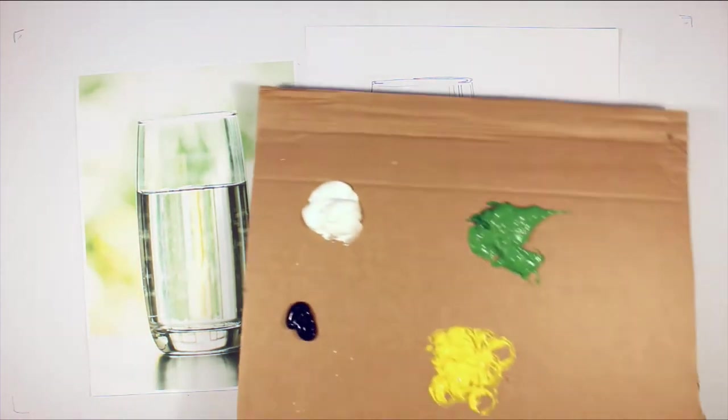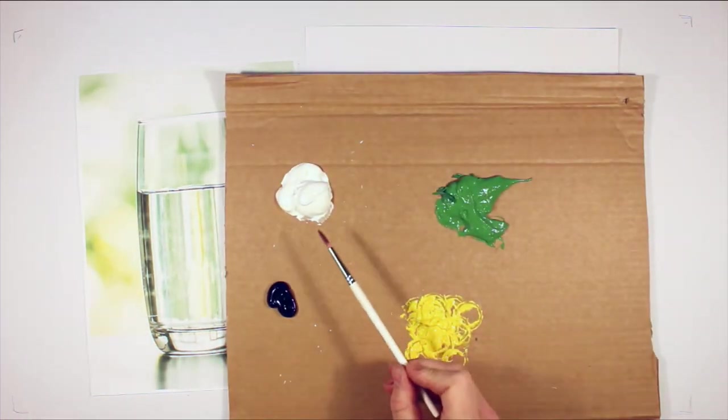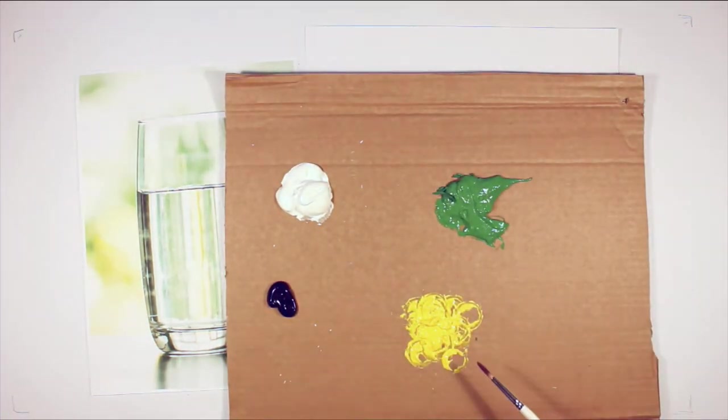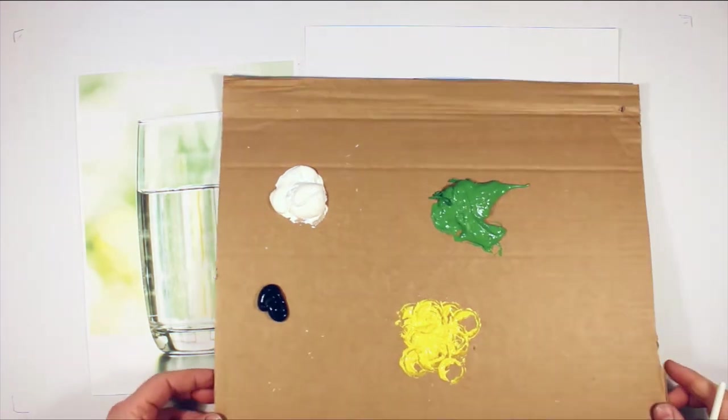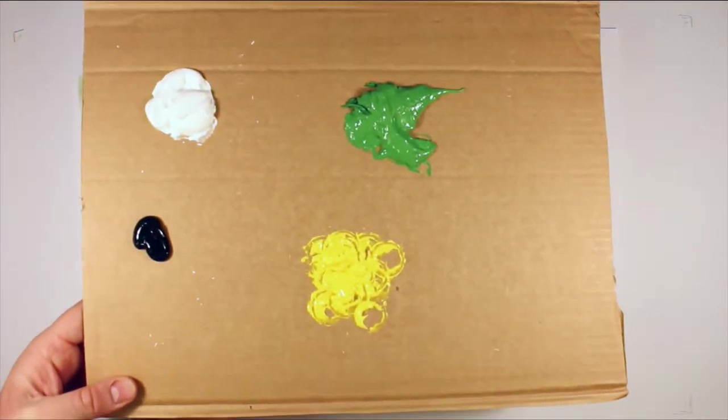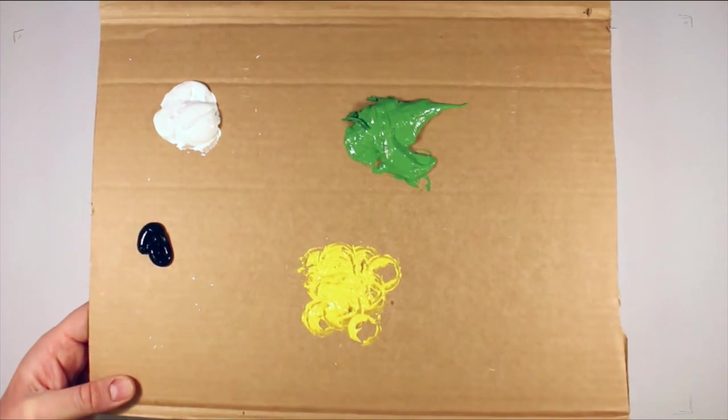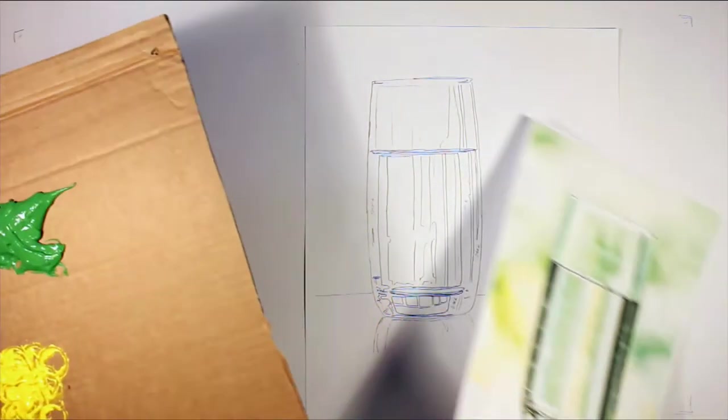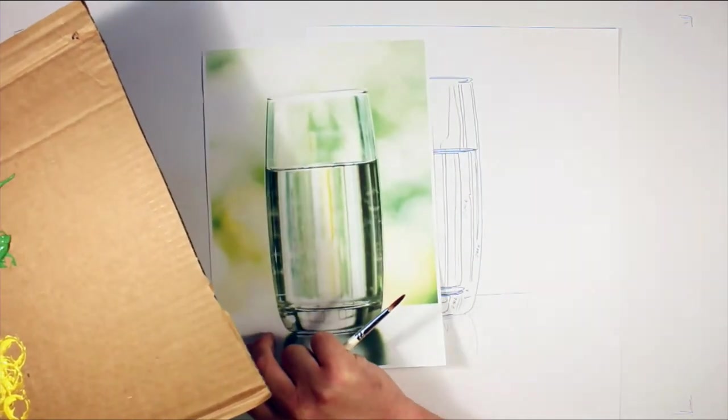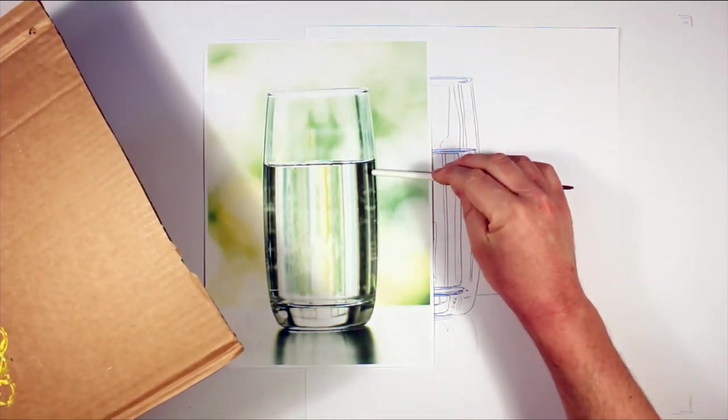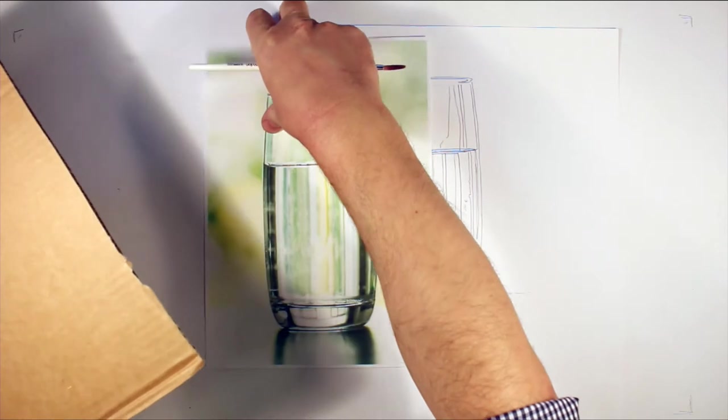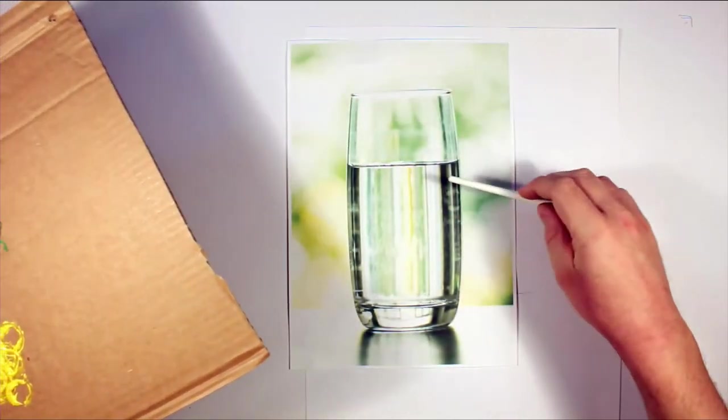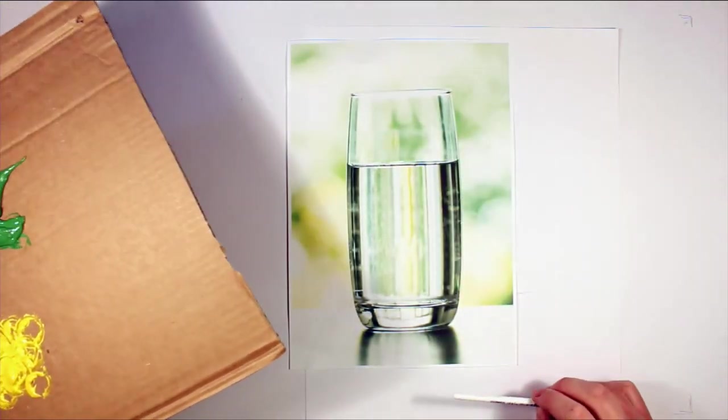So I'm using acrylic paints today. We have white, black, a green, and a little bit of yellow. Not a huge amount of yellow. I'll be honest, I was trying to get it out of the bottle, not a huge amount came out. I'm going to give it a go. And we're going to start off with these darker tones on the right, on the right and left of the image.